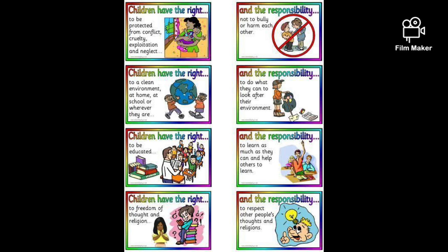We shall learn some more rights and responsibilities for children. Children have the right to be protected from conflict, cruelty, exploitation, and neglect, and the responsibility not to bully or harm each other. Children have the right to a clean environment at home, at school, or wherever they are, and the responsibility to look after the environment. Children have the right to be educated, and the responsibility to learn as much as they can and help others to learn. Children have the right to freedom of thought and religion, and the responsibility to respect other people's thoughts and religions.